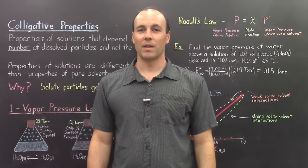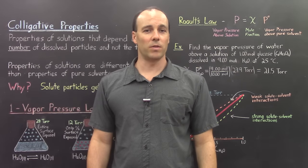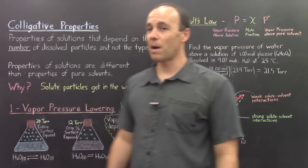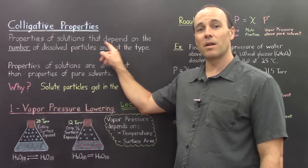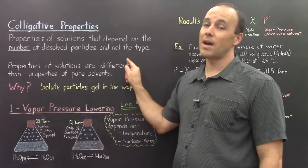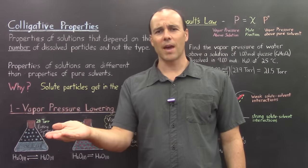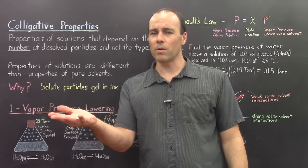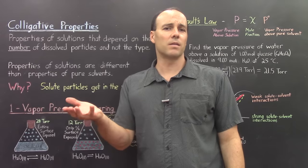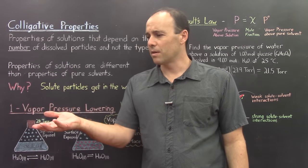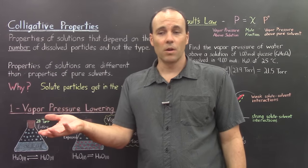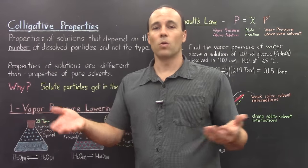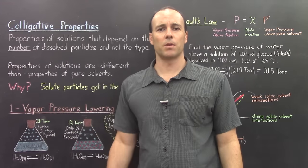Aloha, and welcome back. This lecture is the last one we'll do on solutions, and today we focus on the colligative properties. These are properties of solutions that depend on the number of dissolved particles, and not their type. So solutions have special properties that pure solvents do not, and these properties only depend on how many dissolved particles there are. It doesn't matter if those particles are sugar, salt, CO2, or whatever — it just depends on how many particles are in the solution.